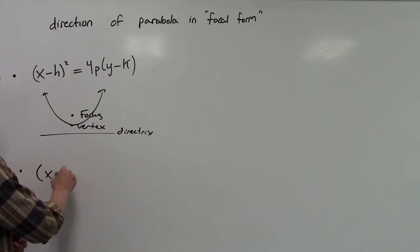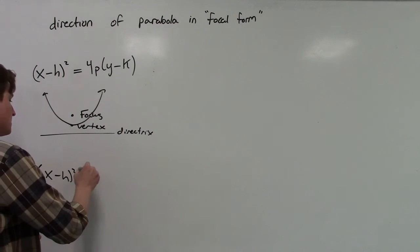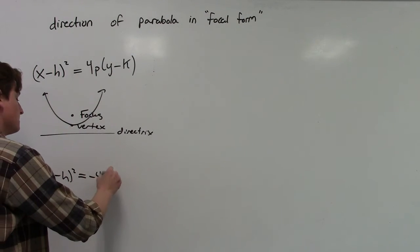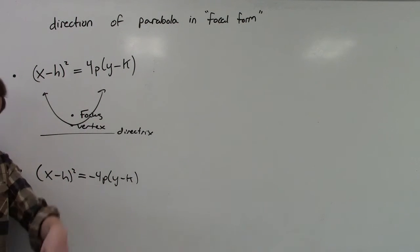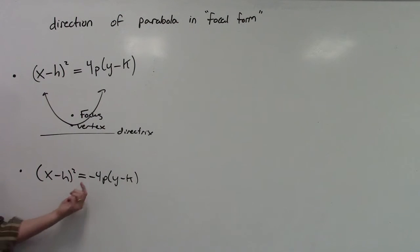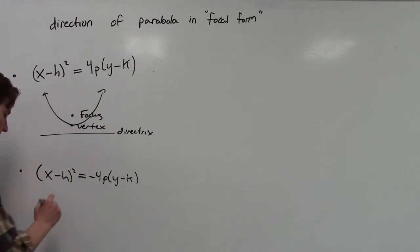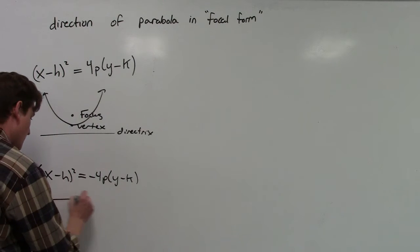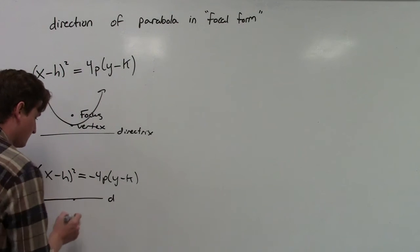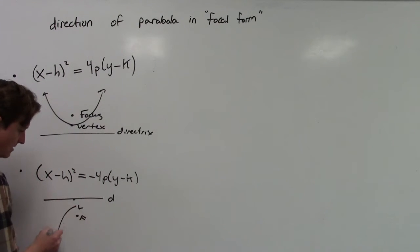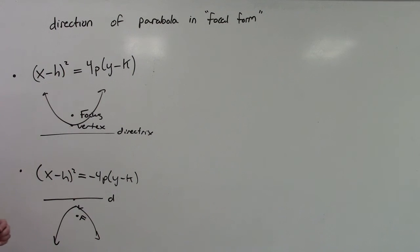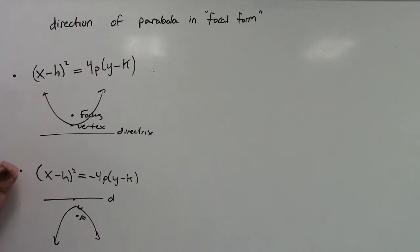So we have (x minus h) squared equals negative 4p times (y minus k). We make this negative, and that has the effect of moving everything down. If there's a negative here, we're going to have a directrix, a focus, and a vertex in the middle, and our parabola is just going to open in the downward direction. Being able to look at the equation and tell whether the graph opens up or down is important.